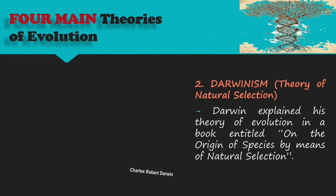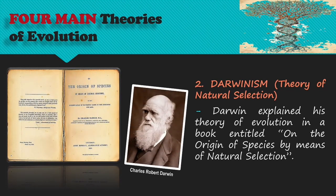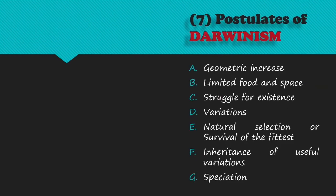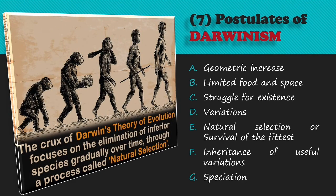Darwinism, or the Theory of Natural Selection, was proposed by Charles Robert Darwin, an English naturalist, whose theory suggests that organisms with the strongest and most desirable characteristics are best able to survive and reproduce. There are seven main postulates of Darwinism: geometric increase, limited food and space, struggle for existence, variations, natural selection or survival of the fittest, inheritance of useful variation, and speciation. It states that all species arise and develop through the natural selection of small inherited variations that increase the individual's ability to compete, survive, and reproduce.